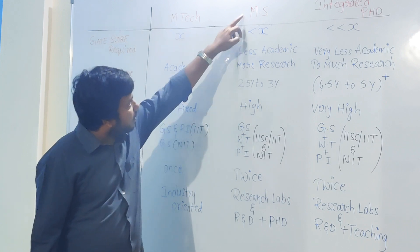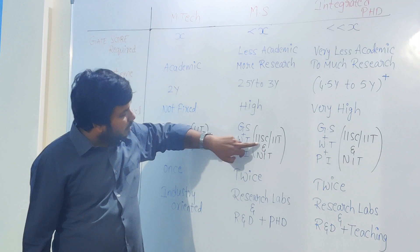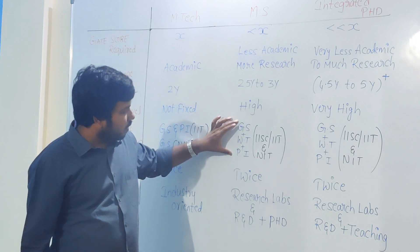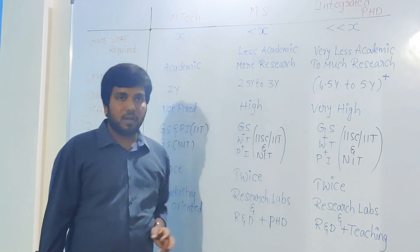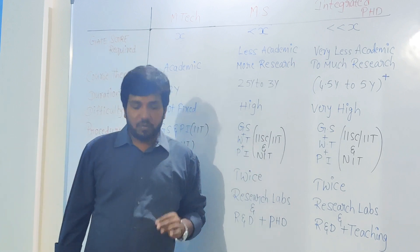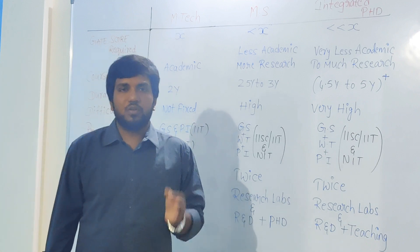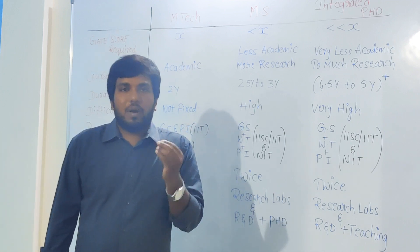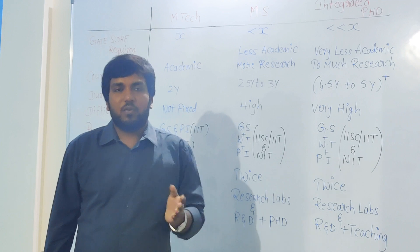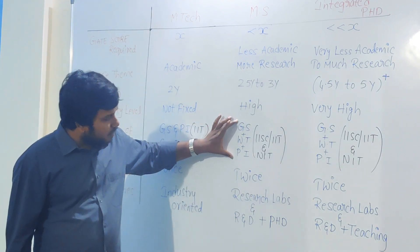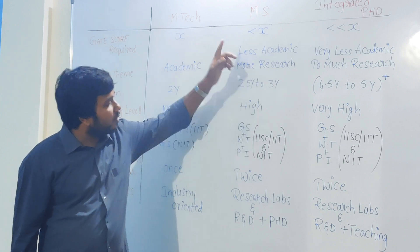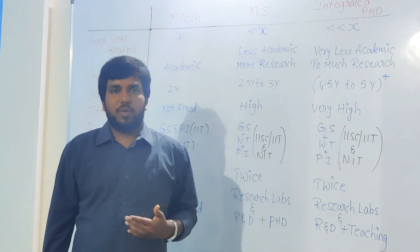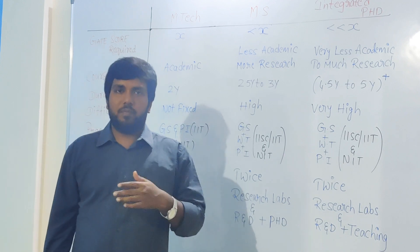For MS — whether in IIT, IISC, or NIT — three things constitute the admission process: GATE score, a written test at the particular institution, and a personal interview. If you perform well in the written test, you are shortlisted for the interview. If not, you go home. Doing well in all three gets you admission. Getting MS is a lengthier process, but the GATE score required is lower since fewer students apply for research-oriented programs.